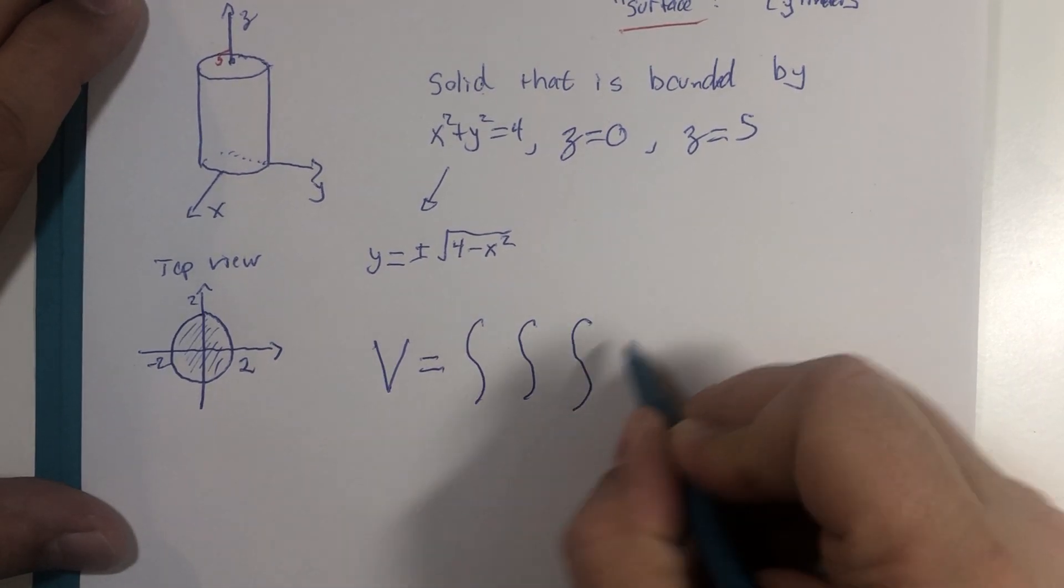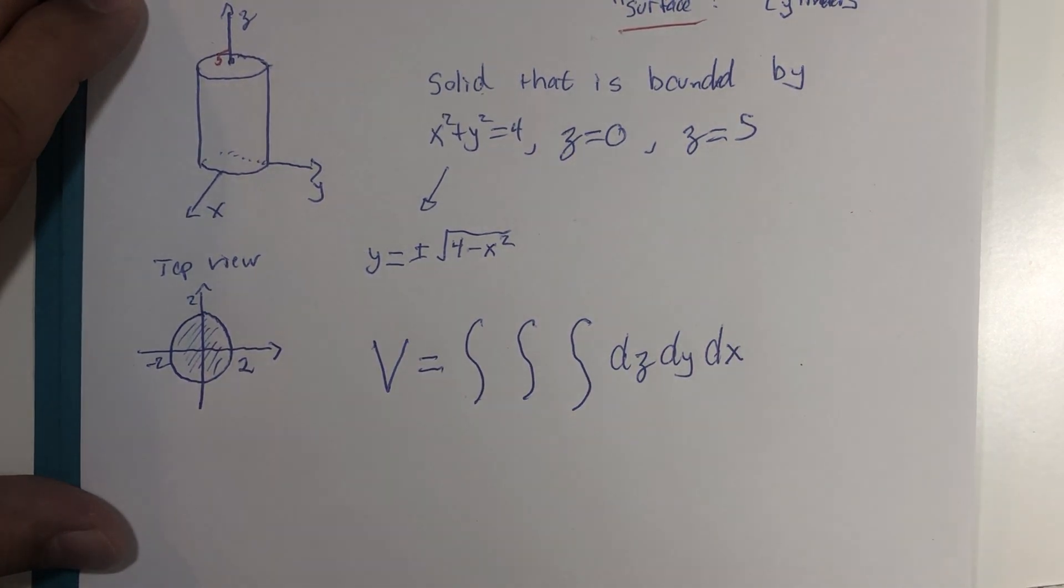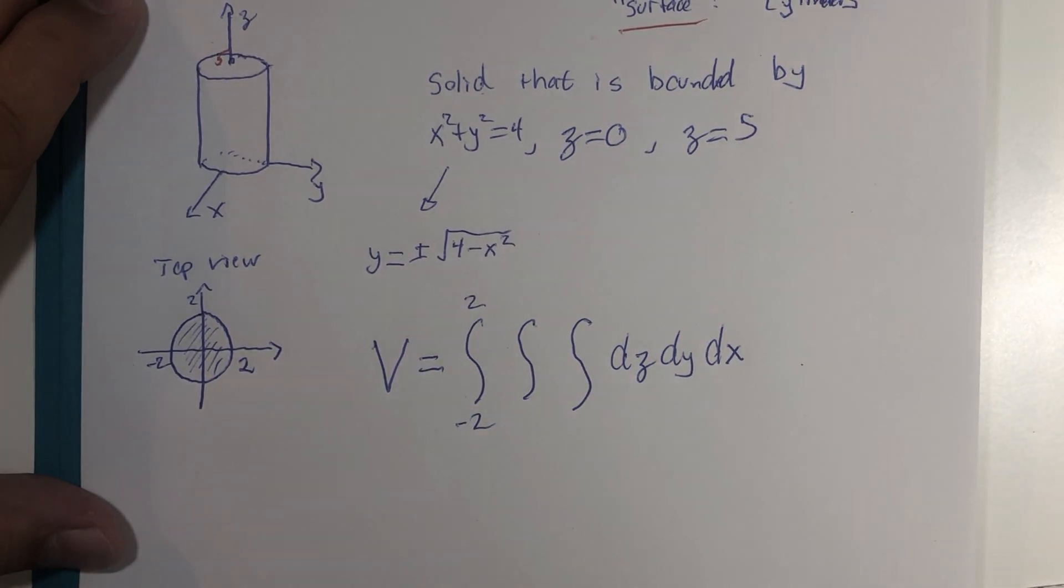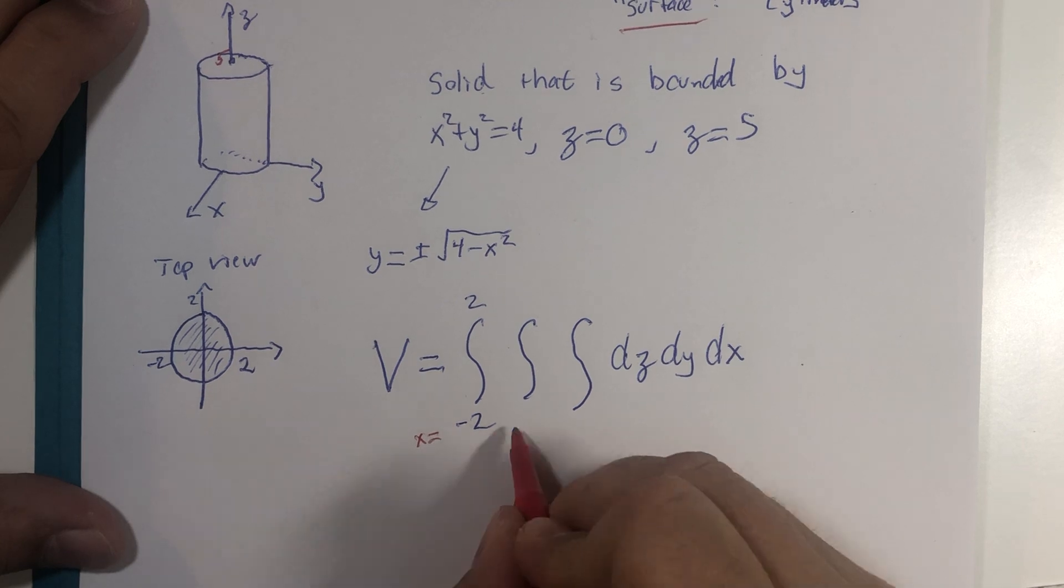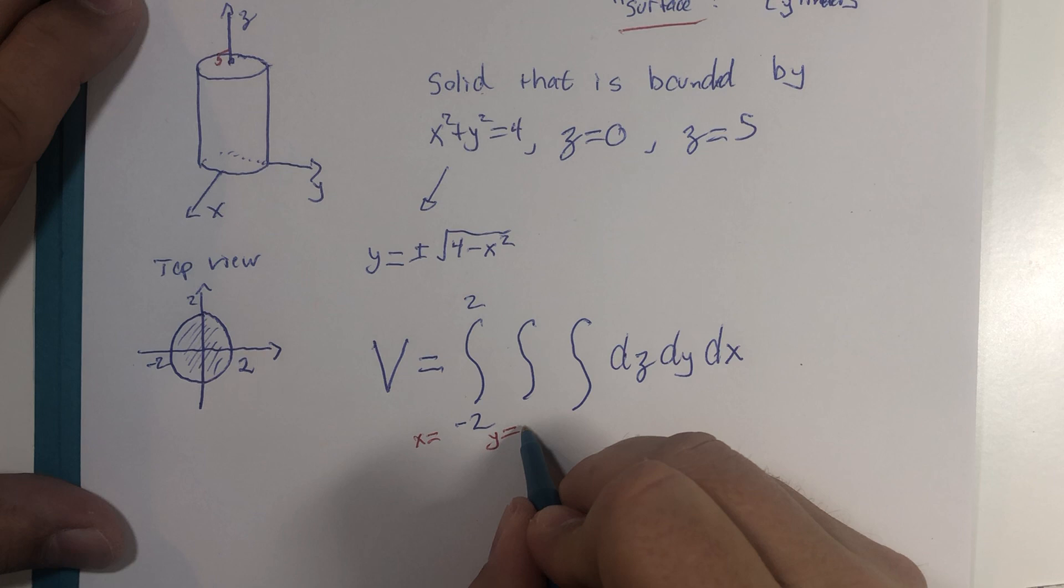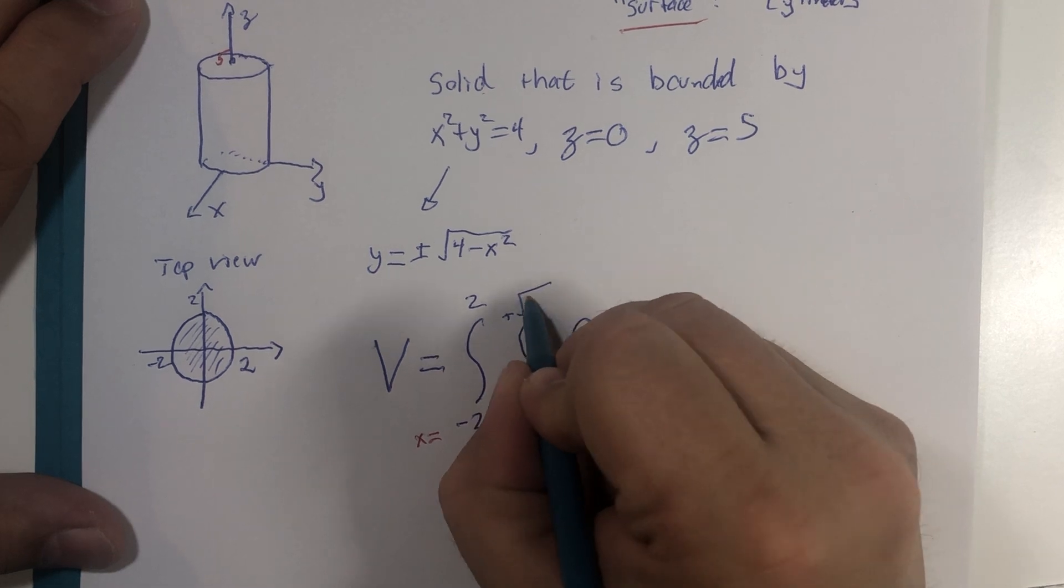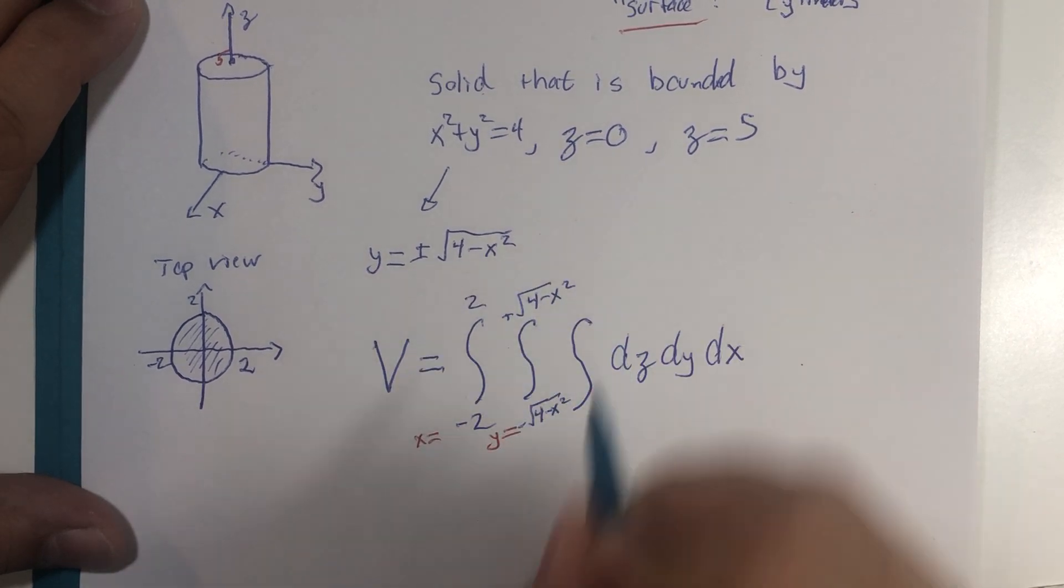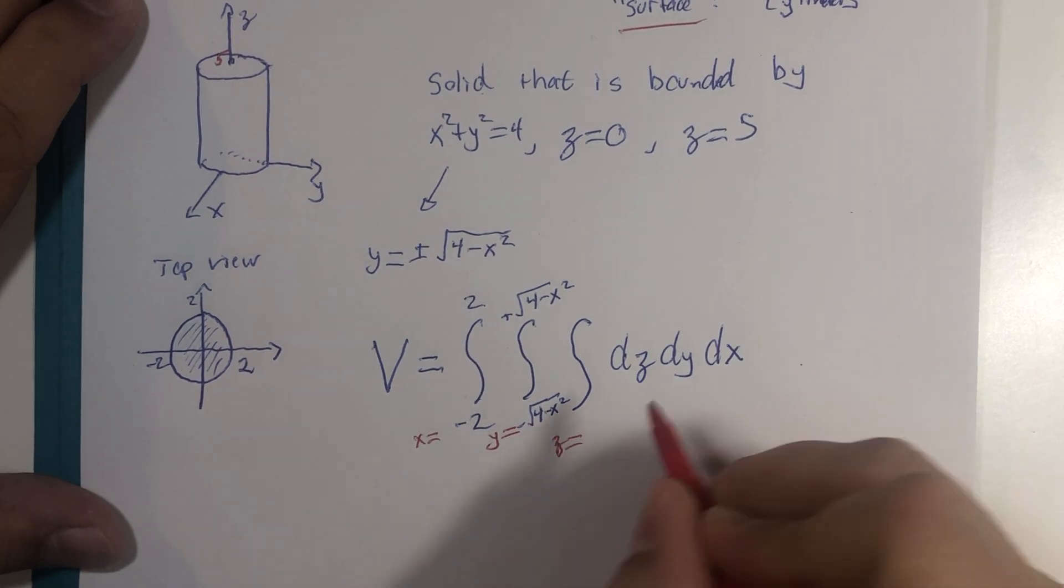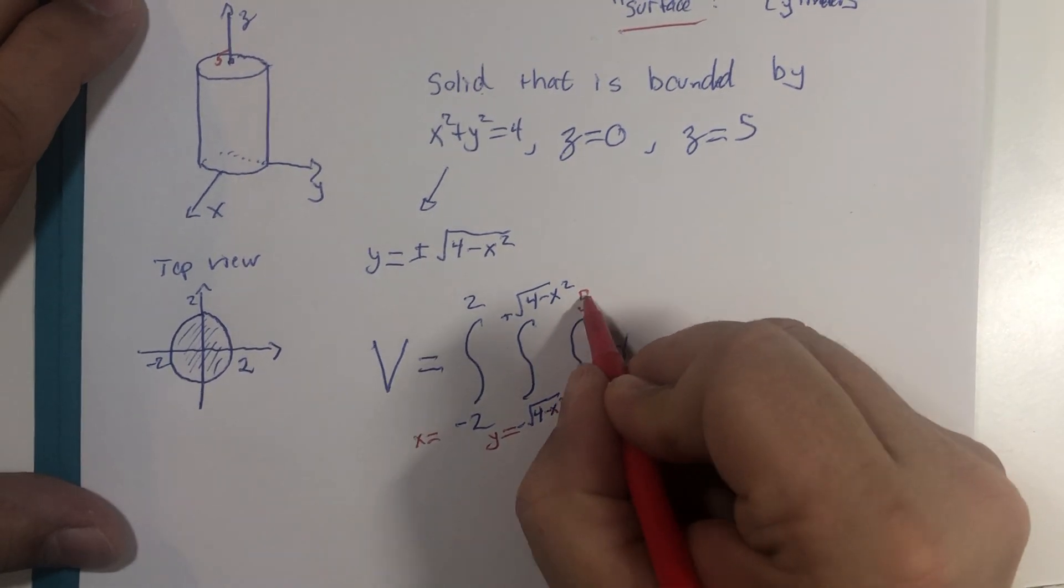And when I set up my triple integration for volume: dz, dy, dx, x goes from negative two to positive two, y goes from negative square root four minus x squared to positive square root four minus x squared. And finally, z actually is given to us from zero to five.